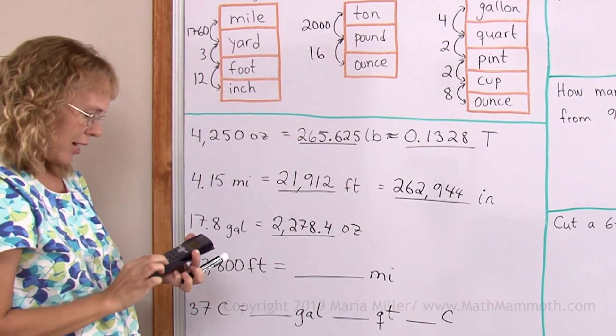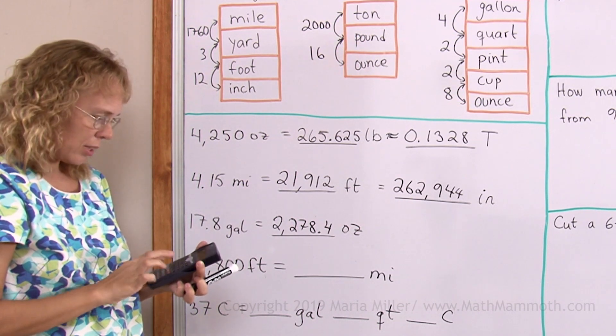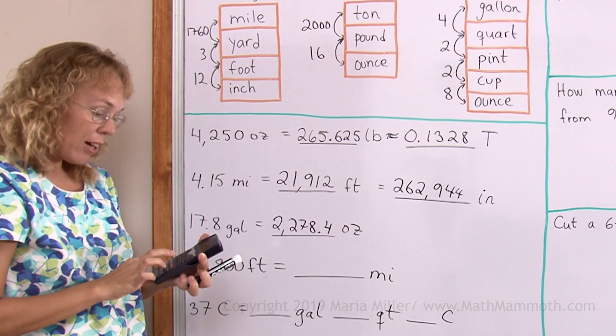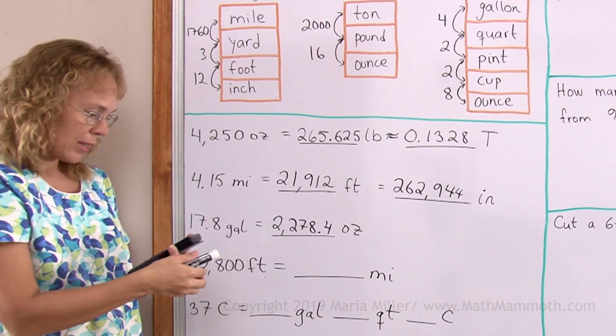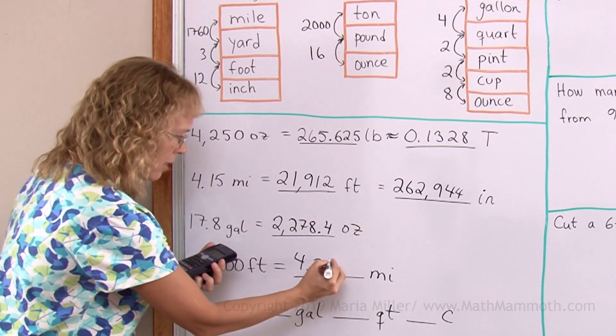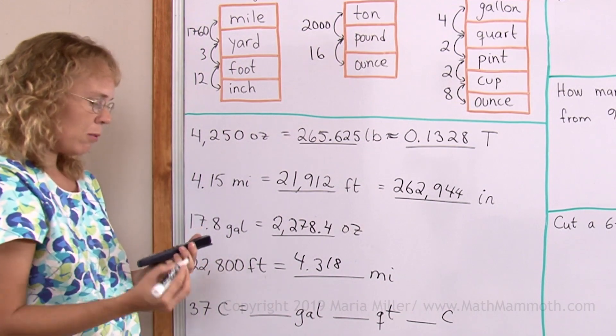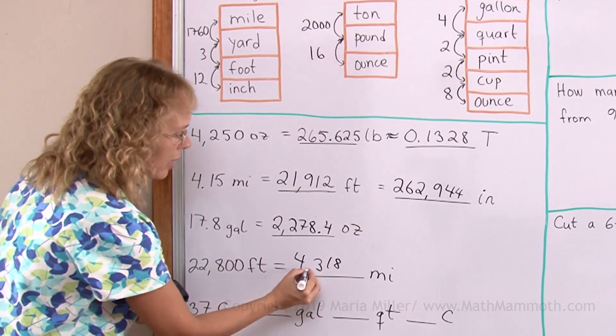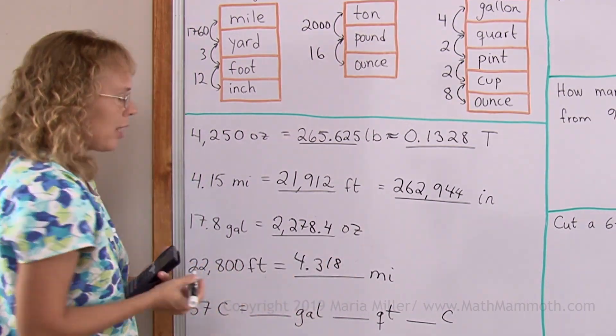So 22,800 divided by 5280 would be 4.318. 1818 actually repeats. But I'll just round it to that.